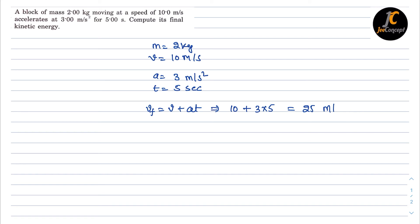Now we have to calculate the final kinetic energy, which is given as KE = ½mv². Putting the values: ½ × 2 × 25² = 625 joules.